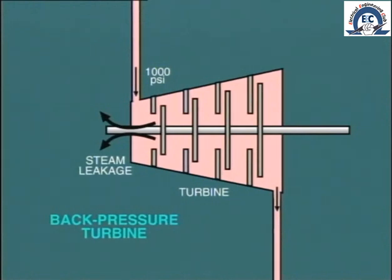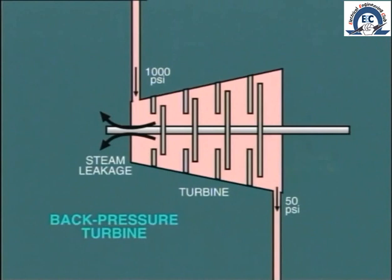Would we not have the same condition at the low-pressure end? Well, yes, if this is a back-pressure turbine with a positive exhaust pressure at, say, 50 psi or over. Although the pressure and temperature is less, there would still be leakage between the casing and the rotating shaft.